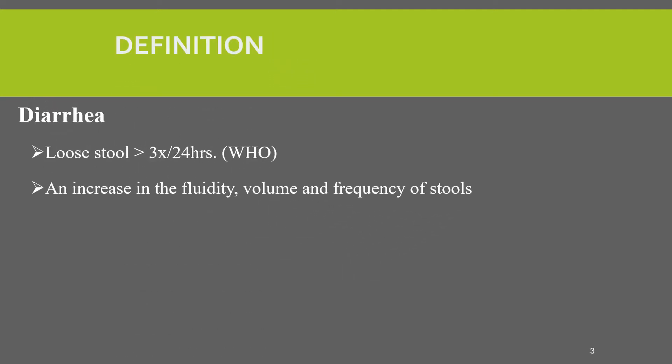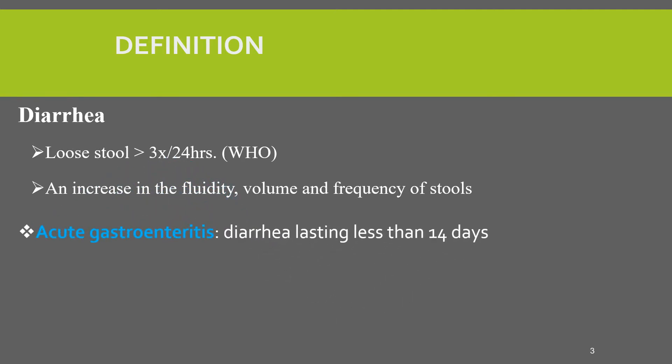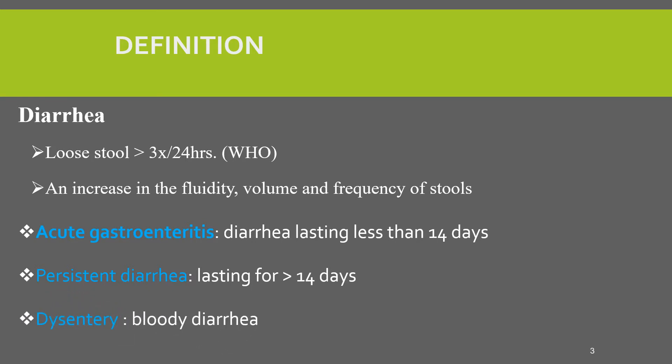When we see the definition of diarrhea, WHO defines diarrhea as passing three or more loose stools within 24 hours, and also we can use diarrhea when the mother reports there is an increase in the fluidity, volume, and the frequency of the stools of the child. Acute gastroenteritis is a diarrhea that lasts less than 14 days, whereas persistent diarrhea lasts 14 days or more, and dysentery is a bloody diarrhea. So acute gastroenteritis and persistent diarrhea are about duration, whereas dysentery is about the composition of the stool.